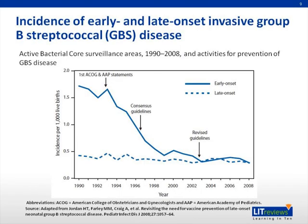The CDC first issued guidelines on the use of intrapartum antibiotic prophylaxis for prevention of GBS disease in 1996. Those guidelines were revised in 2002 when it was recommended that all women undergo vaginal-rectal screening for GBS colonization at 35 to 37 weeks gestation to identify which women should receive intrapartum antibiotic prophylaxis. Implementation of the 2002 guidelines has been quite good.